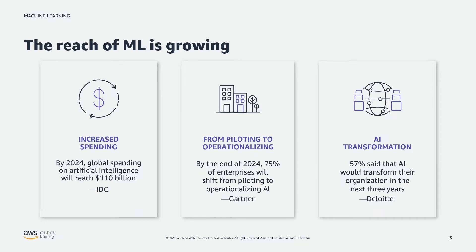The second trend we're seeing is a real shift. Maybe 12 to 18 months ago we saw a lot of companies doing proof of concepts around AI and machine learning — very technical in nature, asking whether AI and machine learning could really work to solve a problem. We've seen that shift quite dramatically this year, moving away from technology projects to very business-oriented projects, with use cases led by business stakeholders solving real core business problems, and organizations expecting real ROI from those projects.